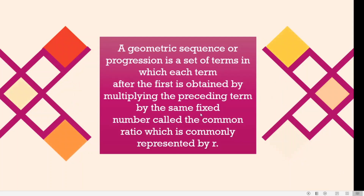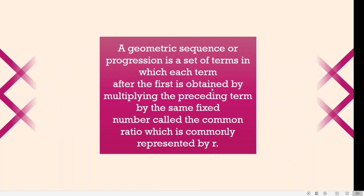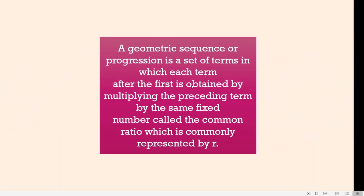A geometric sequence or progression is a set of terms in which each term after the first is obtained by multiplying the preceding term by the same fixed number called the common ratio, which is commonly represented by R.